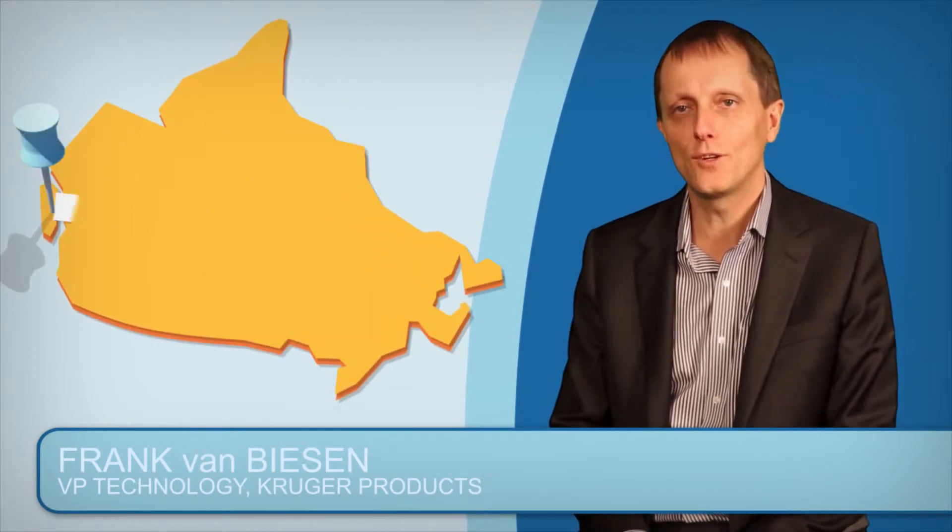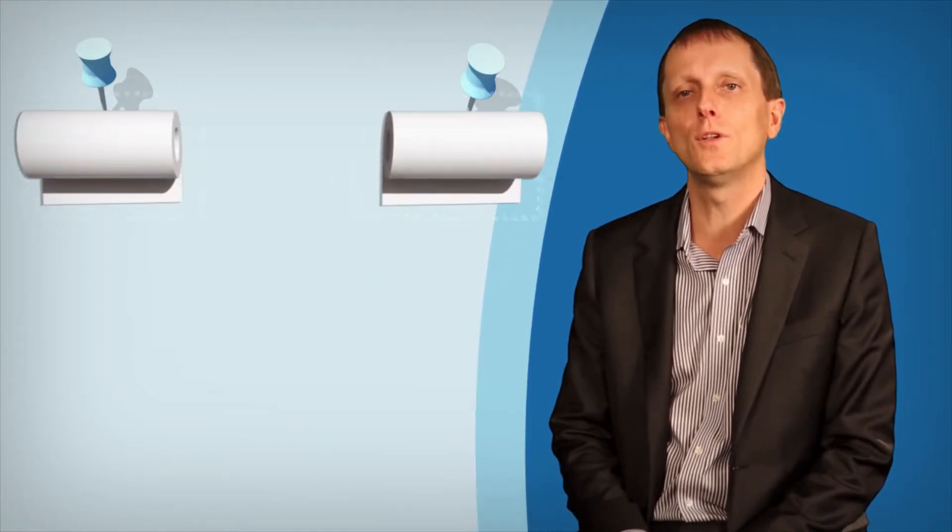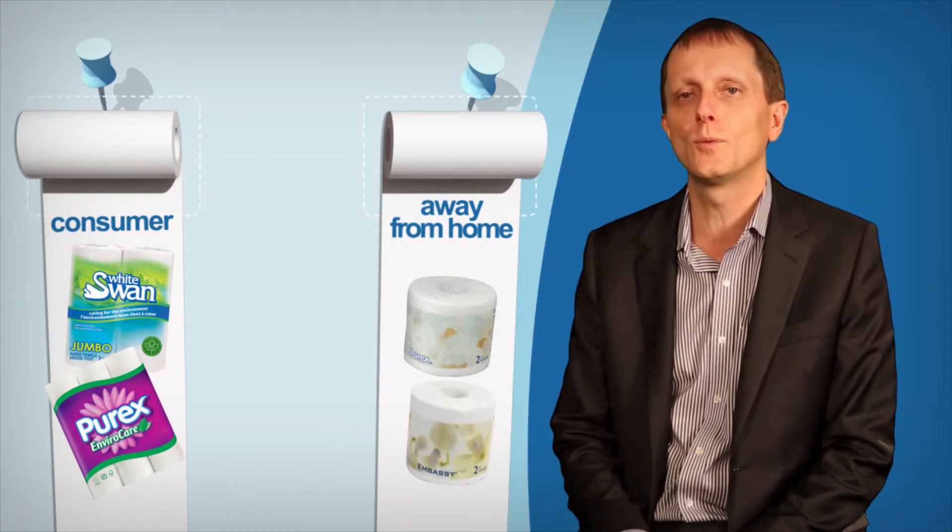Our tissue plant in New Westminster, British Columbia serves Western Canada from Vancouver Island to the Lakehead region of Ontario. It operates two paper machines and nine converting units that produce a full line of well-known consumer and away-from-home tissue products.